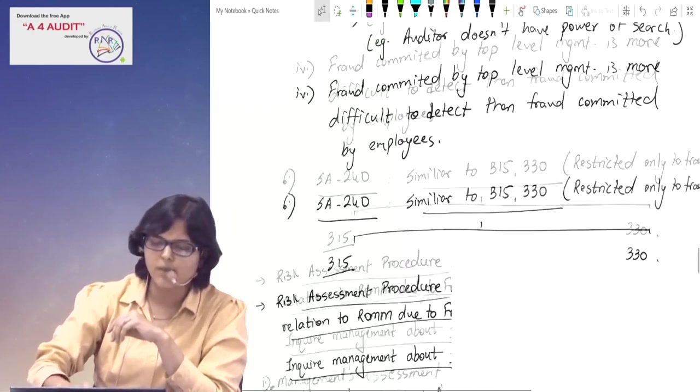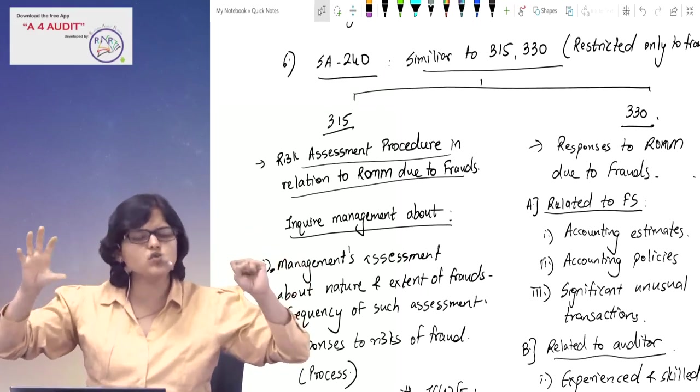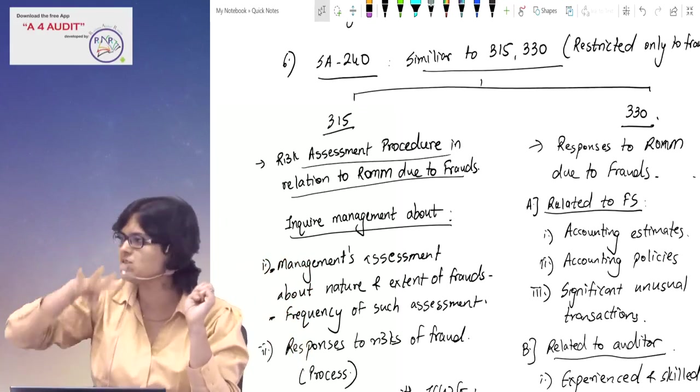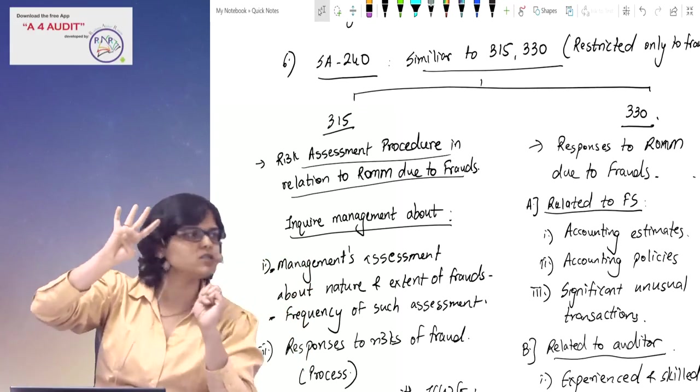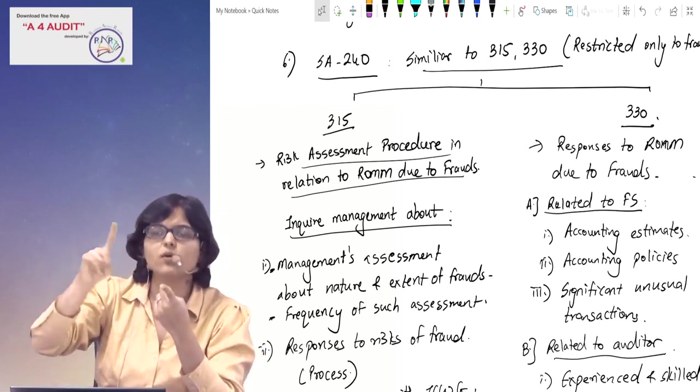After that, we have said an important point - SA No. 240. We divided the discussion into two parts. Auditor has to inquire with the management - four points to inquire if he wants to assess ROMM due to frauds. 315 related inquiry.